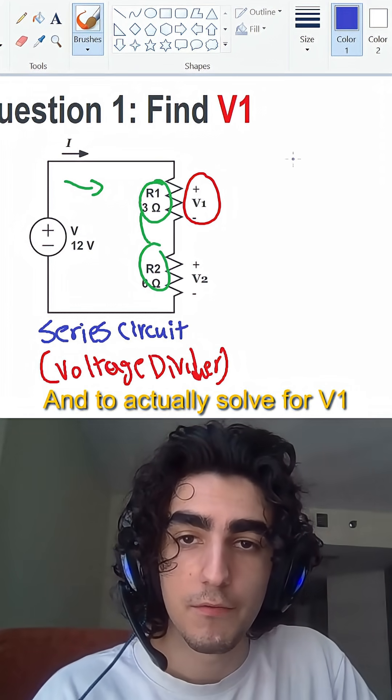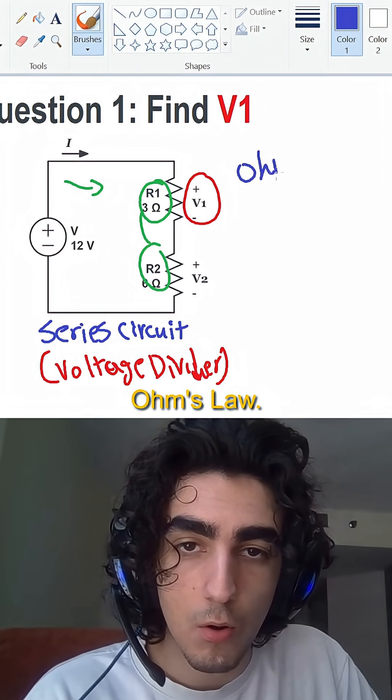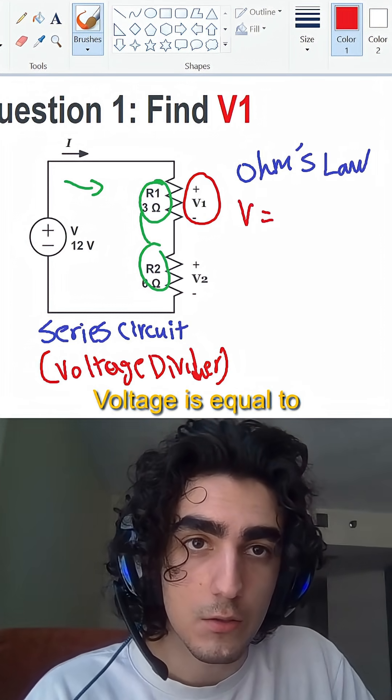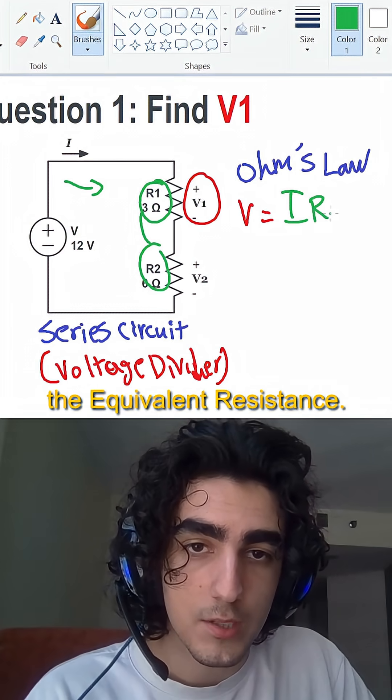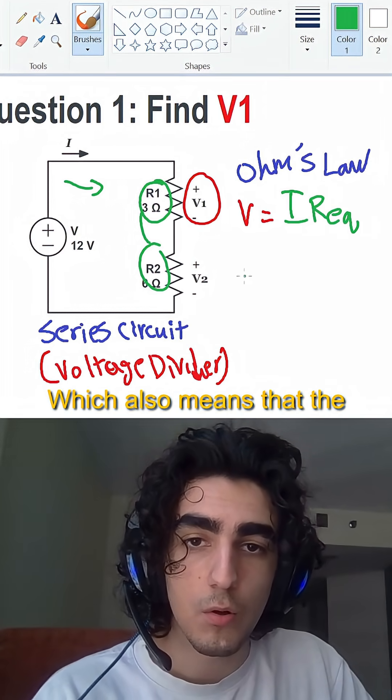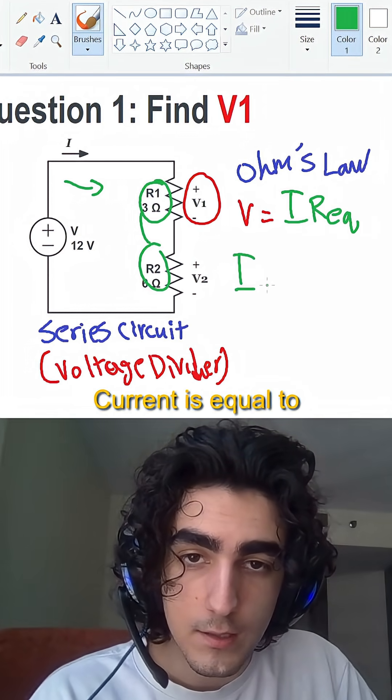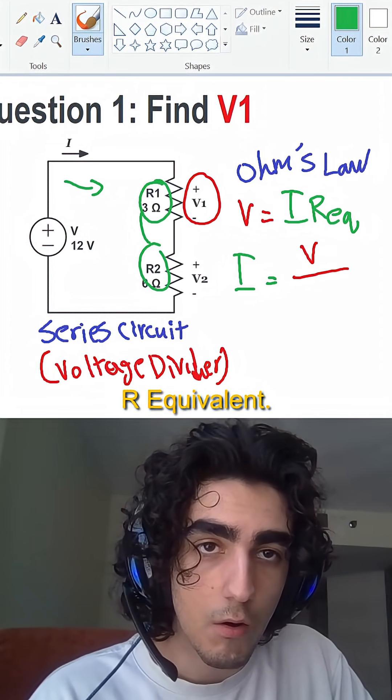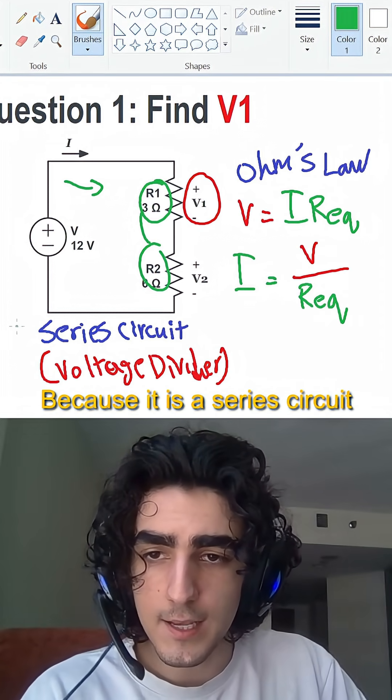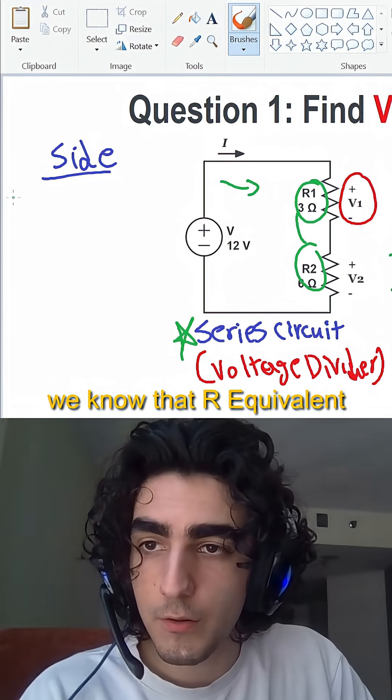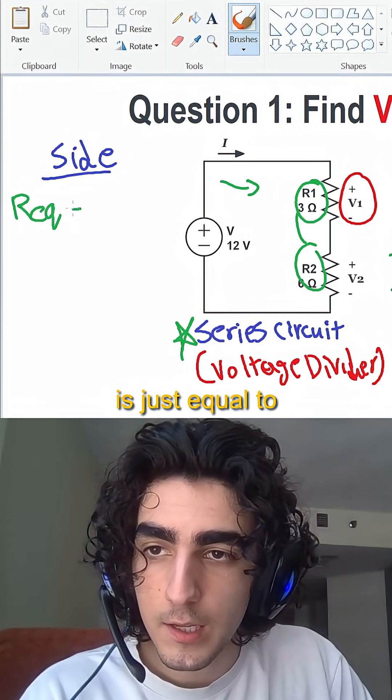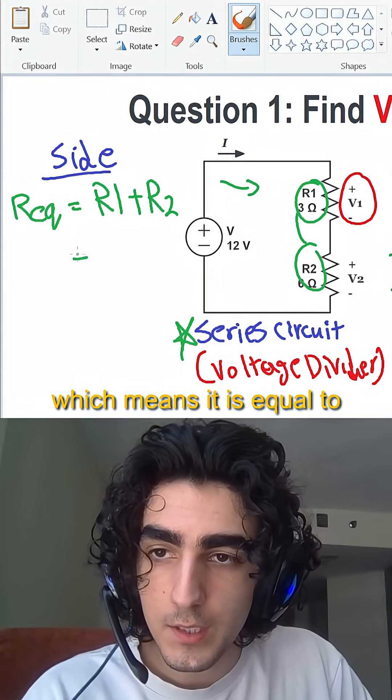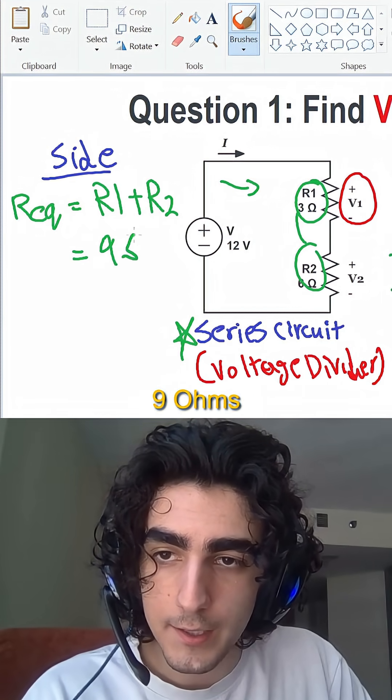And to actually solve for V1, we can use something called Ohm's Law. Ohm's Law states that voltage is equal to current times the equivalent resistance, which also means that the current is equal to voltage over R equivalent. Because it is a series circuit, we know that R equivalent is just equal to R1 plus R2, which means it is equal to 9 ohms.